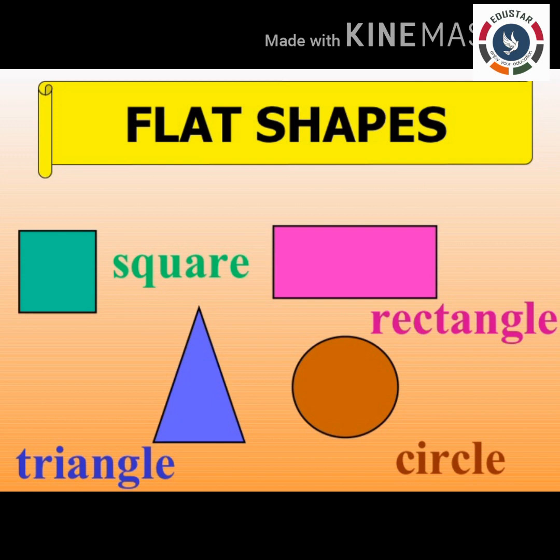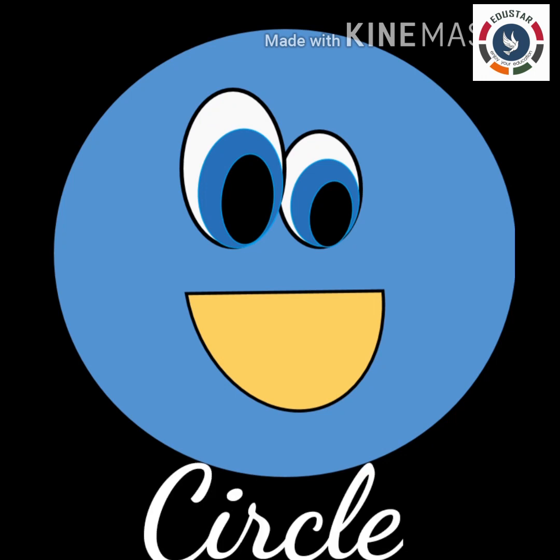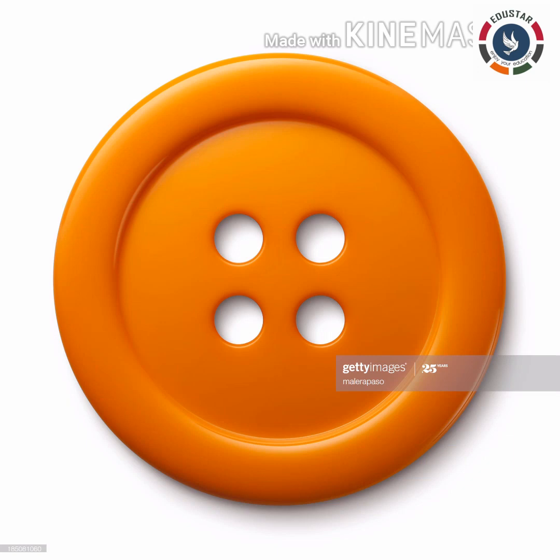All shapes have different sides and different corners. What is a corner? Where two sides join, that is called a corner. What shape is this? Yes, this is a circle. It looks like a round shape. It has no corners.